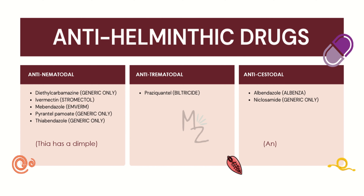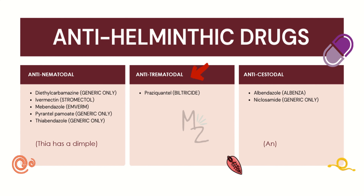Anti-nematodal drugs — used to treat nematode infections — are diethylcarbamazine, ivermectin, mebendazole, pyrantel pamoate, and thiabendazole. The mnemonic is 'Thia has a dimple' — Thia is thiabendazole, and Dimple: D is for diethylcarbamazine, I is for ivermectin, M is for mebendazole, and P is for pyrantel pamoate.